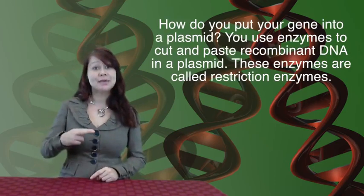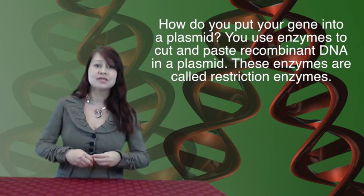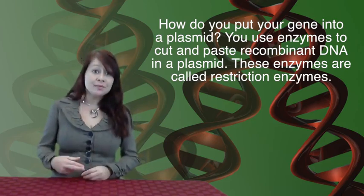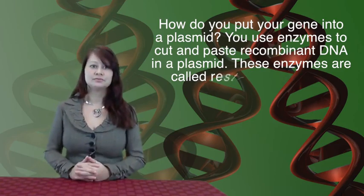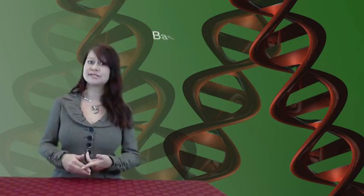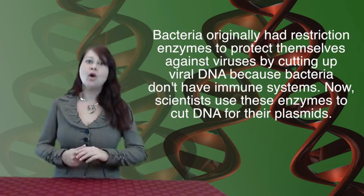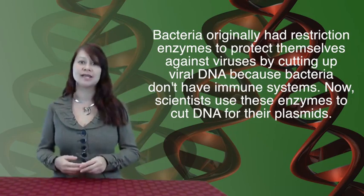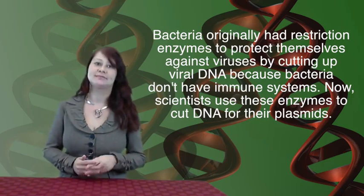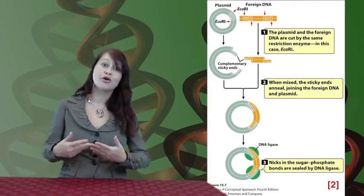Enzymes are used to cut and paste to create this recombinant DNA. We use a class of enzymes called restriction enzymes, which cut the plasmid in specific regions. These restriction enzymes are isolated from bacteria. Bacteria synthesize restriction enzymes because bacteria can be infected by viruses, and bacteria don't have immune systems like we do. What bacteria have to protect themselves are restriction enzymes that cut up any foreign DNA at very specific sites. We can manipulate these restriction enzymes and use them to cut a plasmid to allow us to insert our gene of choice.